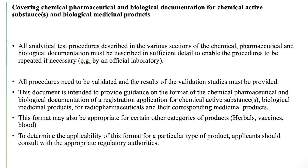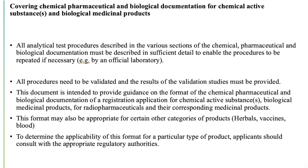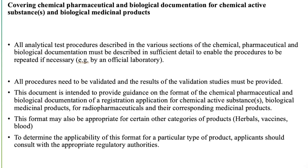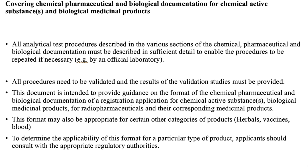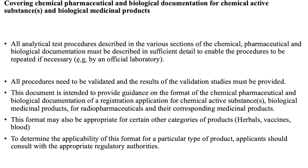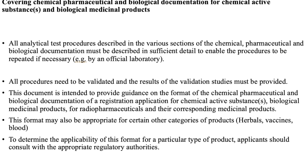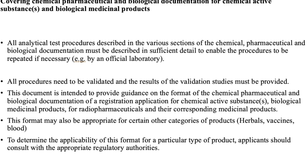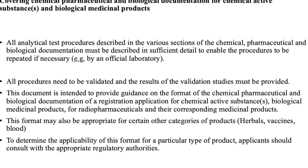This document is intended to provide guidance on the format of the chemical, pharmaceutical, and biological documentation of a registration application for chemical active substance, biological medicinal products, and radiopharmaceuticals and their corresponding medicinal products. This format may also be appropriate for certain other categories of products such as herbals, vaccines, and blood. To determine the applicability of this format for a particular type of product, applicants should consult with the appropriate regulatory authorities.